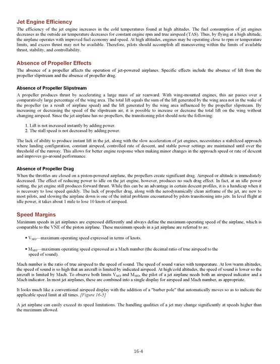Jet engine efficiency. The efficiency of the jet engine increases in the cold temperatures found at high altitudes. Fuel consumption decreases as outside air temperature decreases for constant engine RPM and true airspeed (TAS). By flying at high altitude, the airplane operates with improved fuel economy and speed. At high altitudes, engines may be operating close to RPM or temperature limits and excess thrust may not be available. Therefore, pilots should accomplish all maneuvering within the limits of available thrust, stability, and controllability.